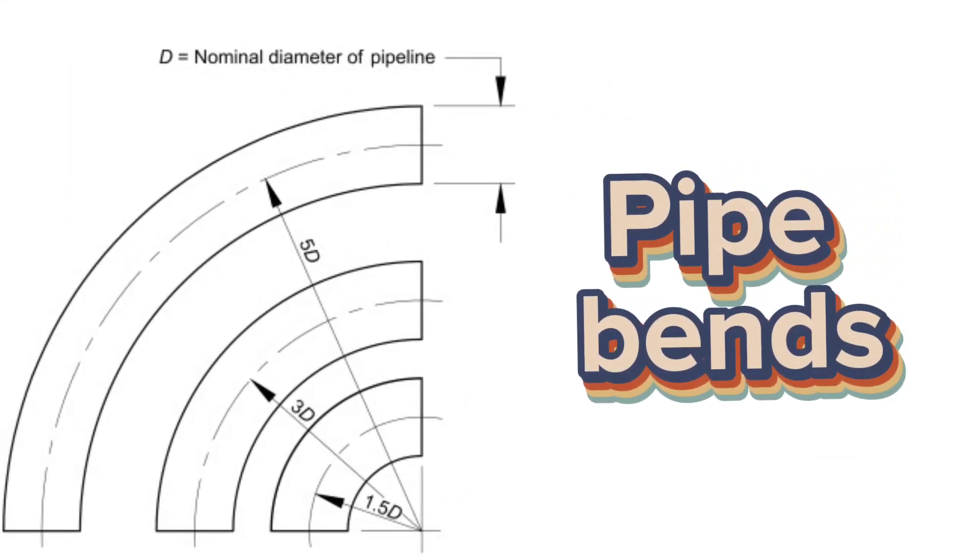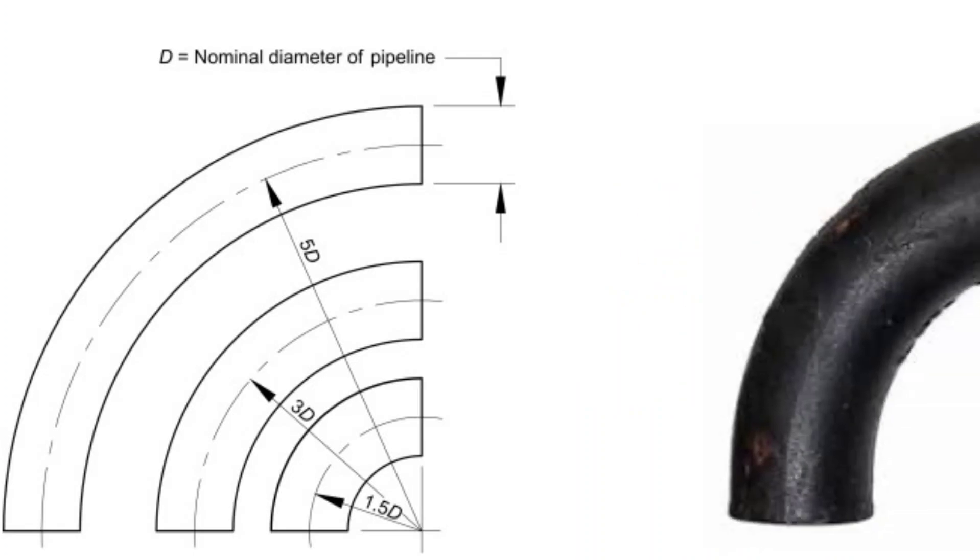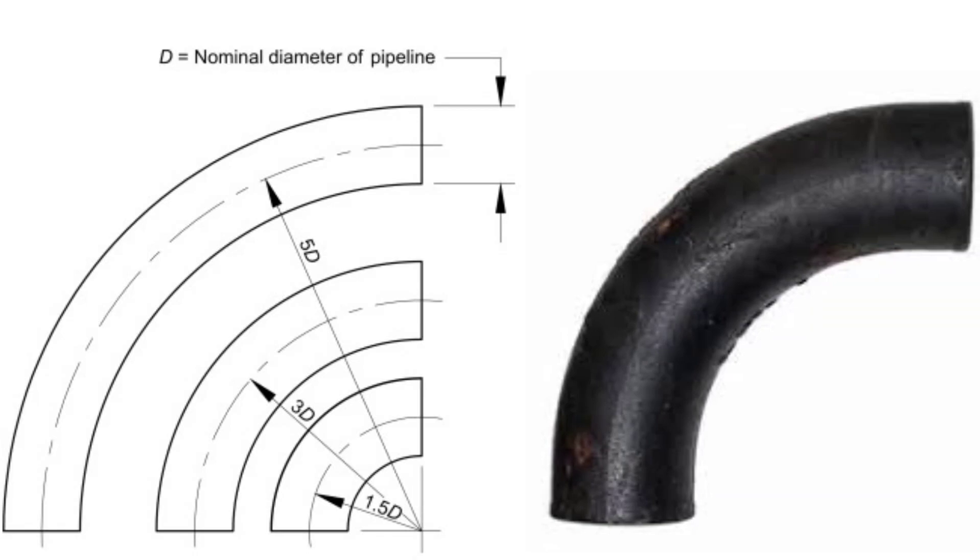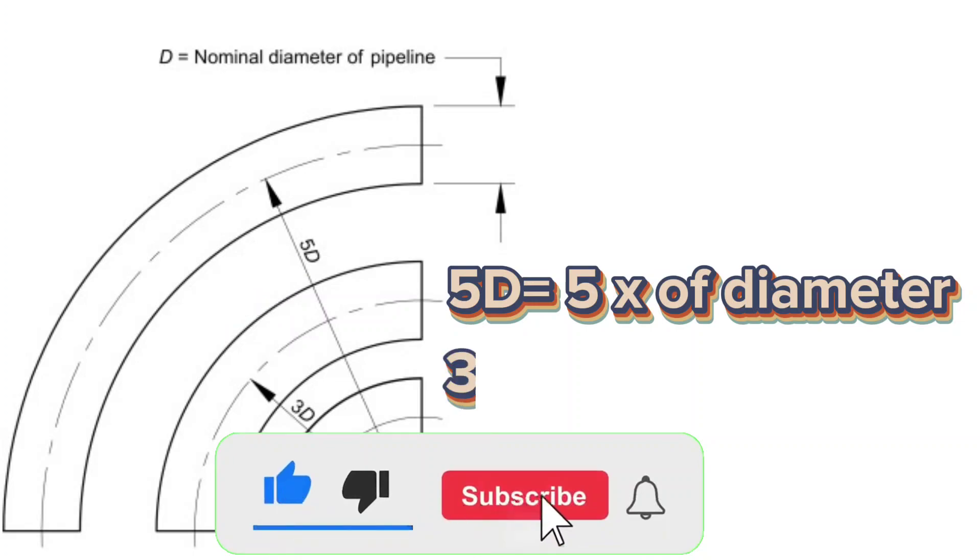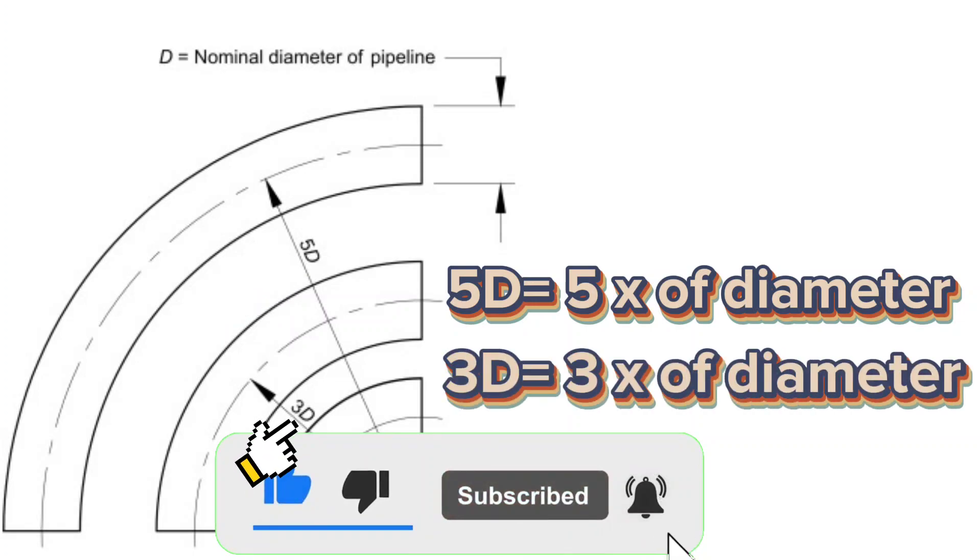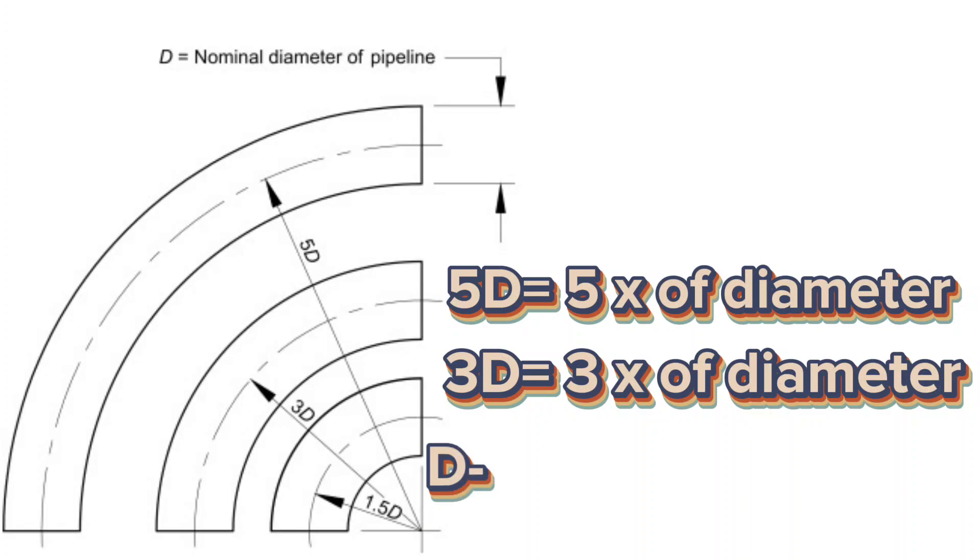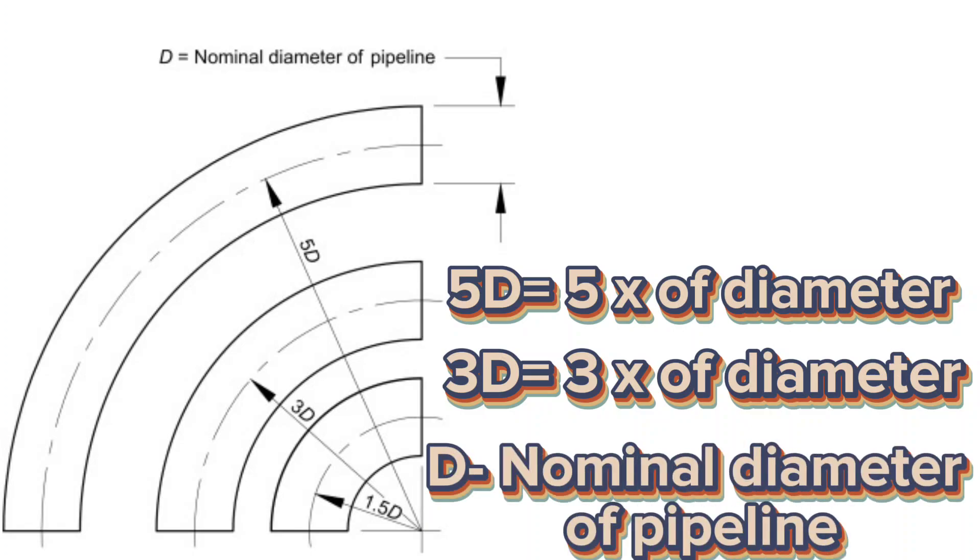In addition to standard elbows, pipe bends elbows are also used in pipe fabrication. Pipe bends, often referred to as elbows, are special pipeline components widely used in pipelines. Bends are made from straight pipe. Common bending radius are 3 and 5 times the pipe size. 5D equals 5 times of the diameter. 3D equals 3 times of the diameter. Here, D is nominal diameter of pipeline.